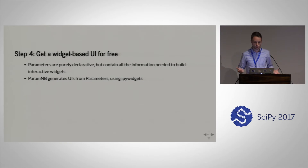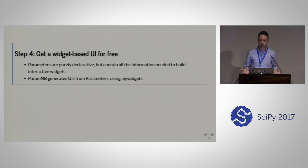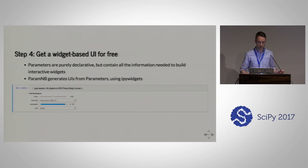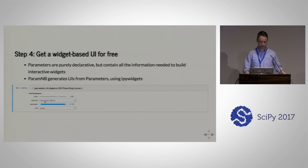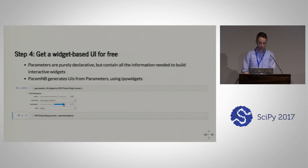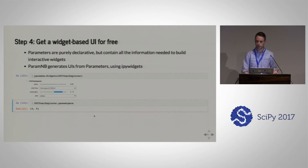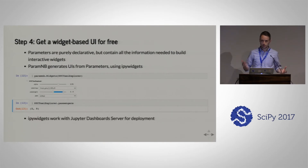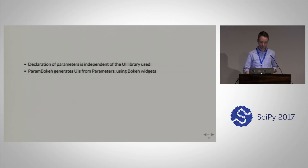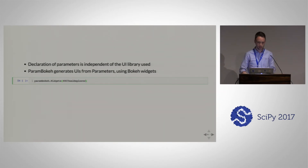We've actually expressed a lot of intent in these parameters. We've given any UI library enough information to plot some widgets. We have UI extensions for Param — first, ParamNB, which uses IPyWidgets to display the parameters we declared as a set of widgets. We get a slider for alpha, a dropdown for the wide range of color maps, a range slider for the number of passengers, and we can pick between pickups and drop-offs. If we move the slider, the actual values immediately reflect on the parameter of the class. IPyWidgets also allows us to deploy on the Jupyter Dashboard Server, which it turns out is no longer maintained.